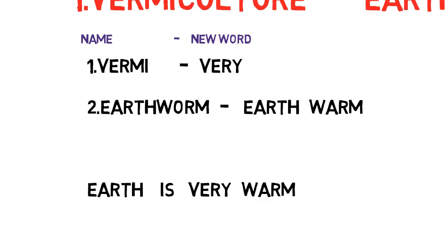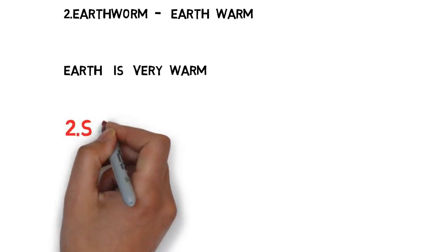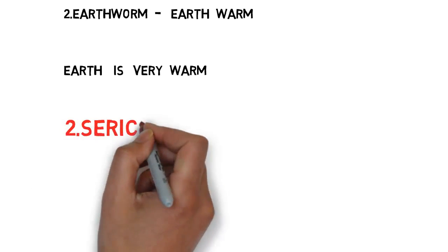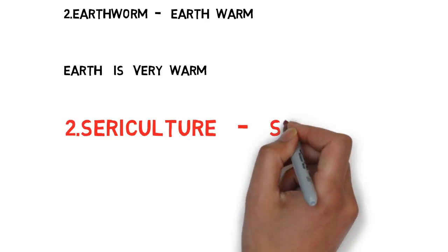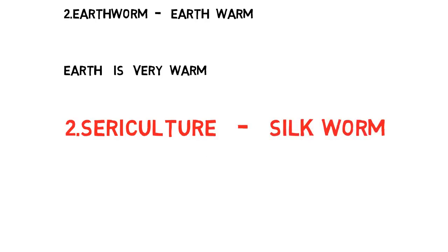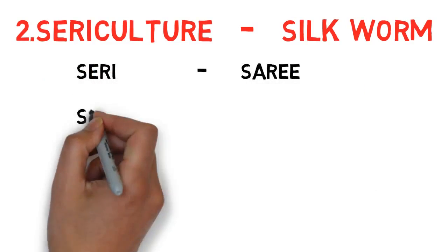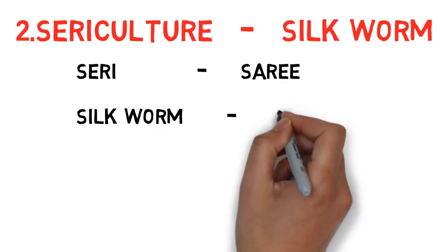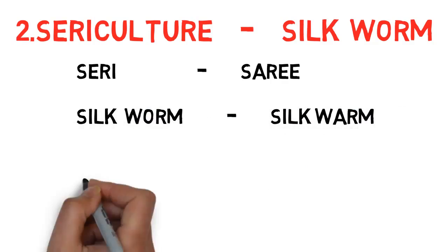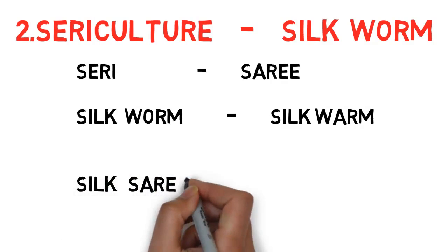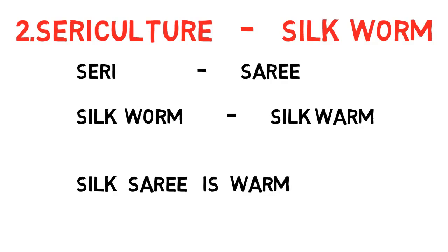Try to repeat the sentence three or four times so that you can never forget it throughout your life. This is the best way to remember easily. For the second one — sericulture is related to silkworm. The word 'seri' — try to remember it as 'sari'. Both sound the same: seri, sari.